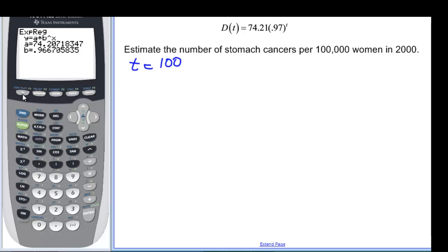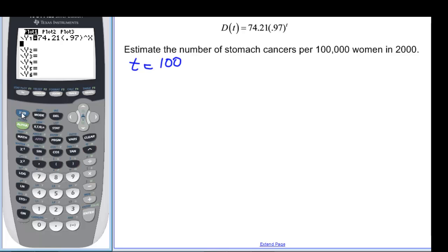So we just plug and chug. In fact, if I put my equation in my calculator, 74.21 times 0.97 in parentheses, carat X, and then I go and say, second window.